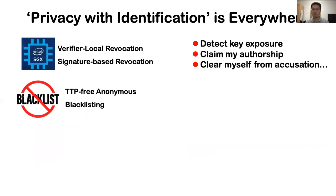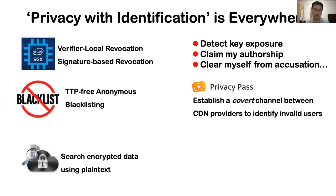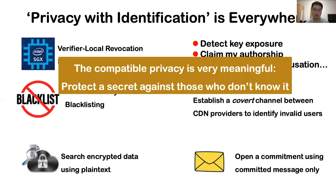Besides those anonymous authentication schemes, privacy-with-identification-style primitives appear in many other topics. In privacy paths, it is used to establish a covert channel and to identify invalid users. In encryption, the identification functionality is essential to enable searching encrypted data using plaintext, which is crucial for fast searching. Moreover, if a commitment supports identification, opening can be done by just presenting the committed message. Such a commitment is even useful for instantiating RAM protocols in some settings.